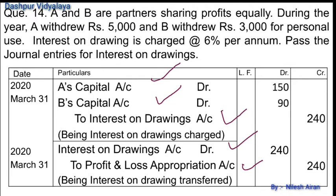A's drawings are rupees 5000 at 6% interest = rupees 300 for a full year. Since the date is not given, interest is charged only for 6 months, so 300 / 2 = rupees 150. For B, drawings are rupees 3000 and 6% of 3000 = rupees 180 for the full year. Charged only for 6 months = rupees 90. Total interest on drawings = rupees 240, transferred to profit and loss appropriation account.